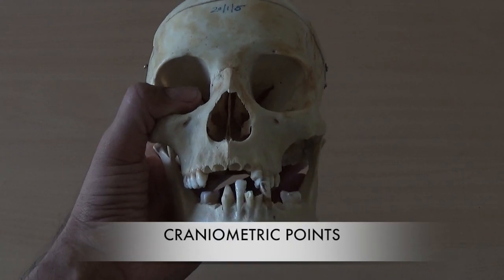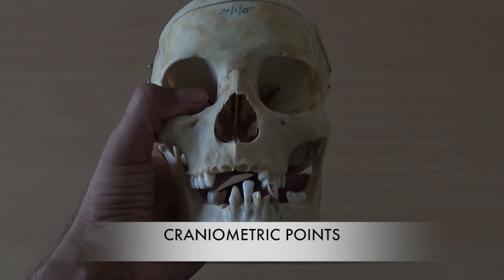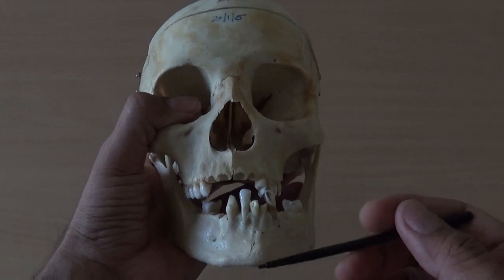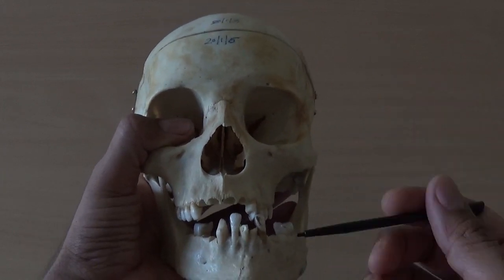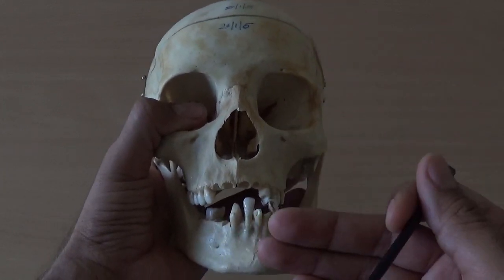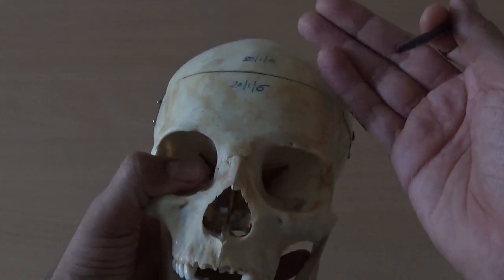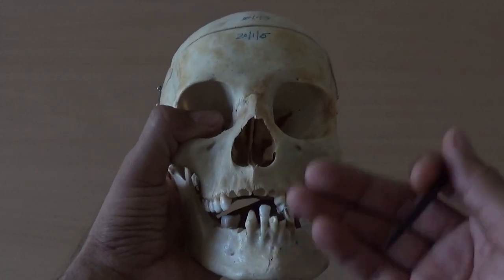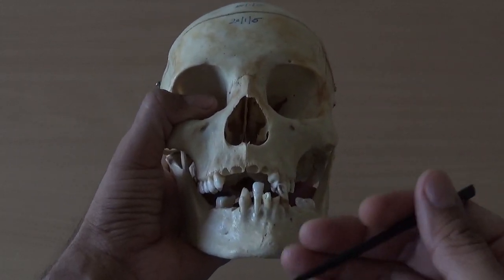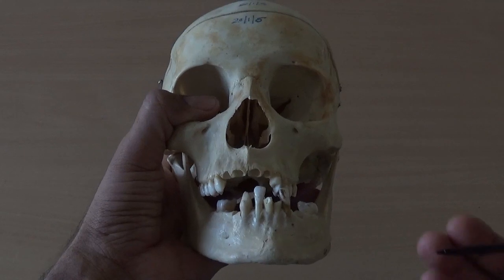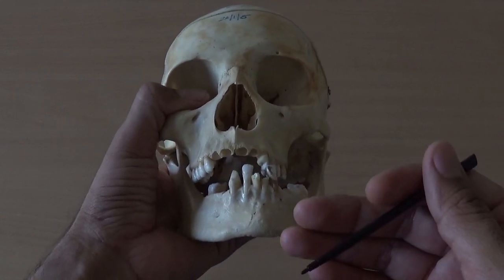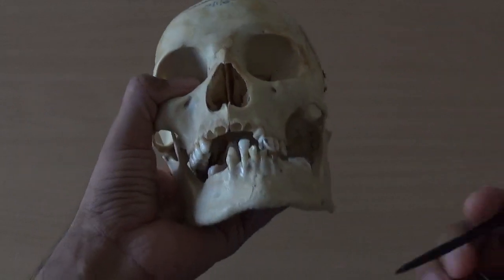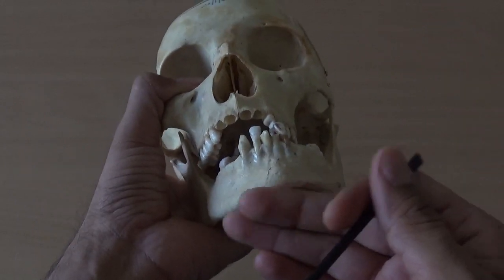Hello everyone, today we are going to discuss craniometric points. For descriptive purposes, they are studied along the midline and along the side of the skull. Let's see first the craniometric points found along the midline of the skull. We will discuss these points from before backward and from below upward.